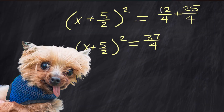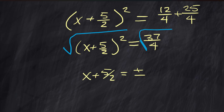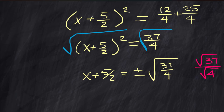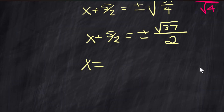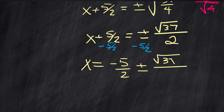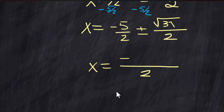It looks ugly but it's correct. Take the square root of both sides: x + 5/2 = ±√(37/4). Since √(37/4) = √37/√4 = √37/2, subtracting 5/2 from both sides gives x = −5/2 ± √37/2. Combining over a common denominator of 2, the final answer is x = (−5 ± √37) / 2.